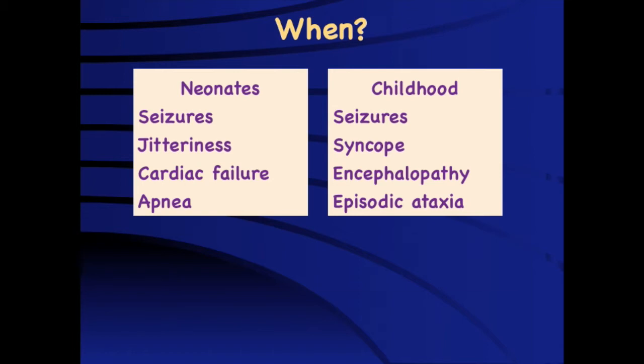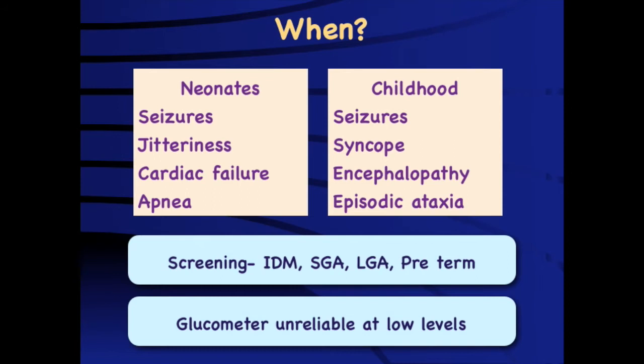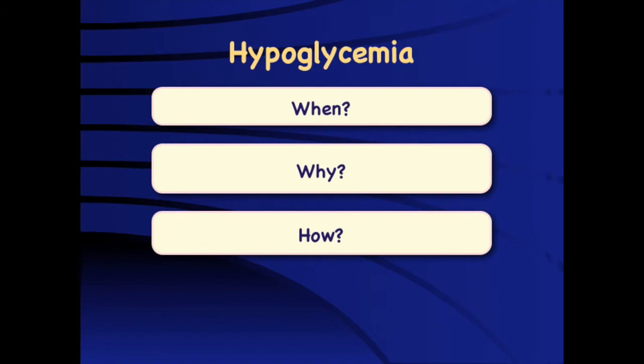If we find any child having episodic variations in behavior or consciousness, one needs to think of hypoglycemia as a strong possibility. Many conditions require routine evaluation for hypoglycemia, particularly in the setting of infants of diabetic mothers, small and large for gestational age babies, and preterm babies, because they are at very high risk. Importantly, the glucometer is not very reliable at low readings — it is designed mainly to pick up high readings — so when we have a low reading, we should also take a confirmatory lab sample.